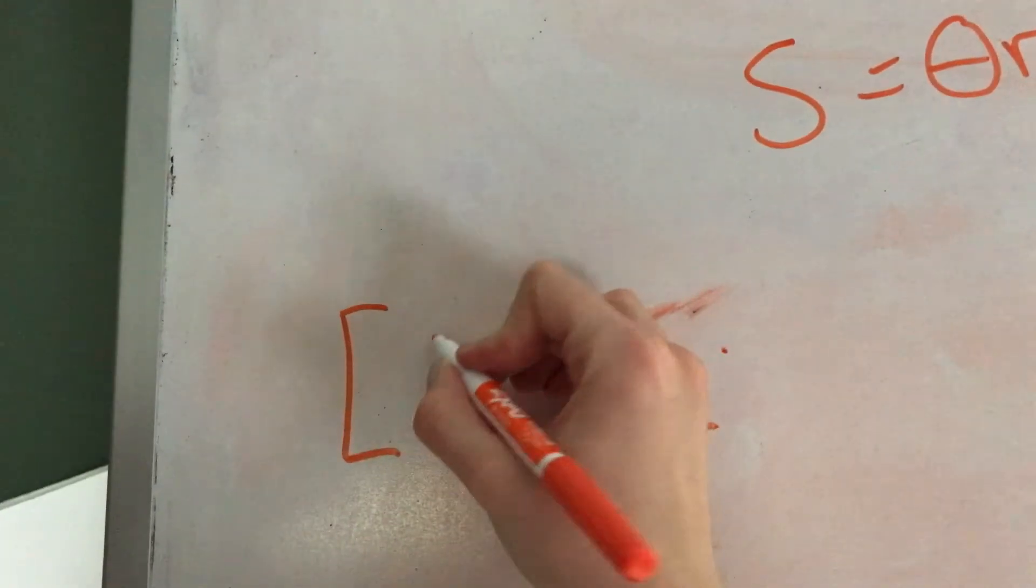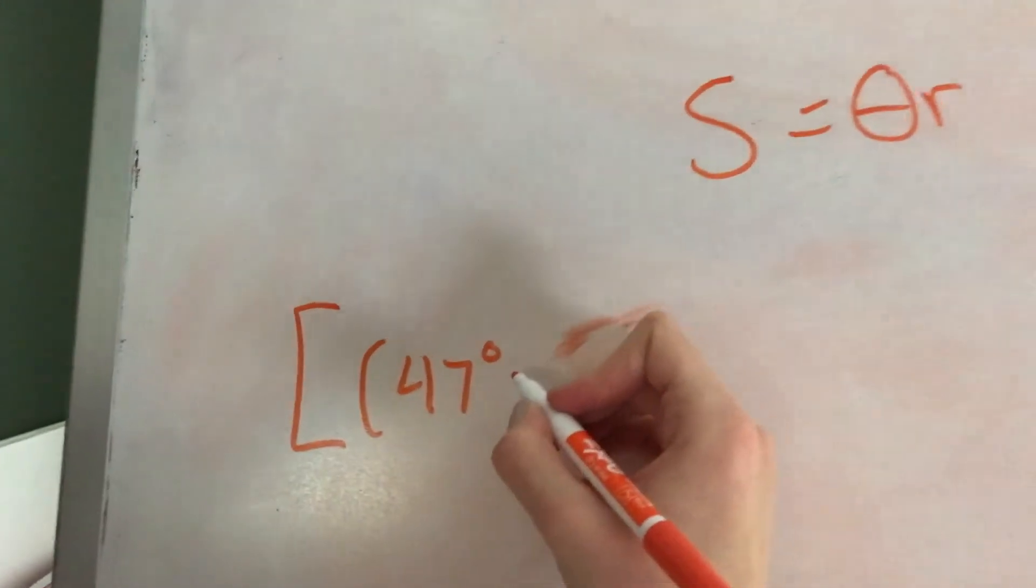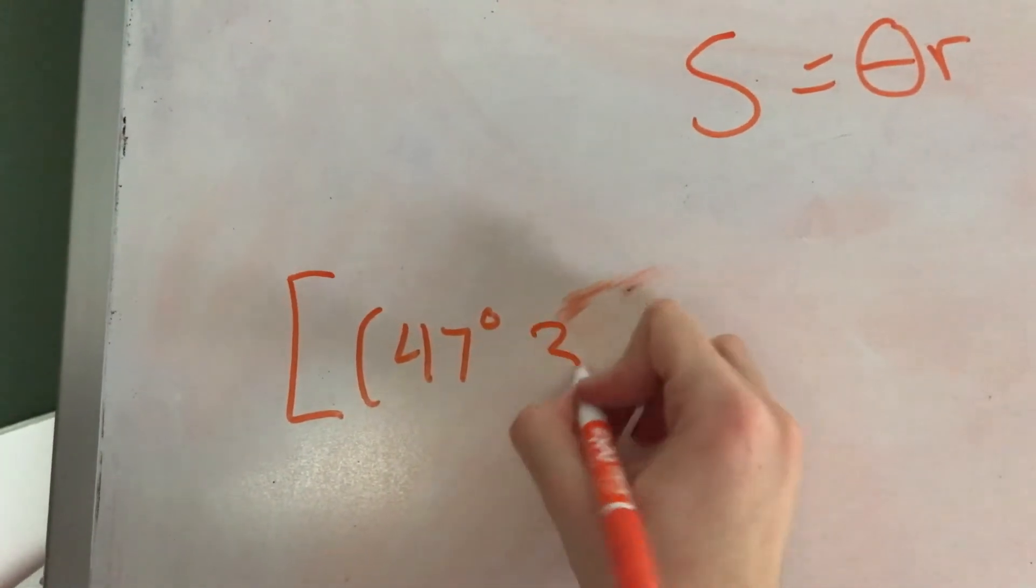So obviously we're going to do some subtraction to find our distance. We're going to find the difference between these two degrees. We put brackets and then we have 47 degrees, 37 minutes